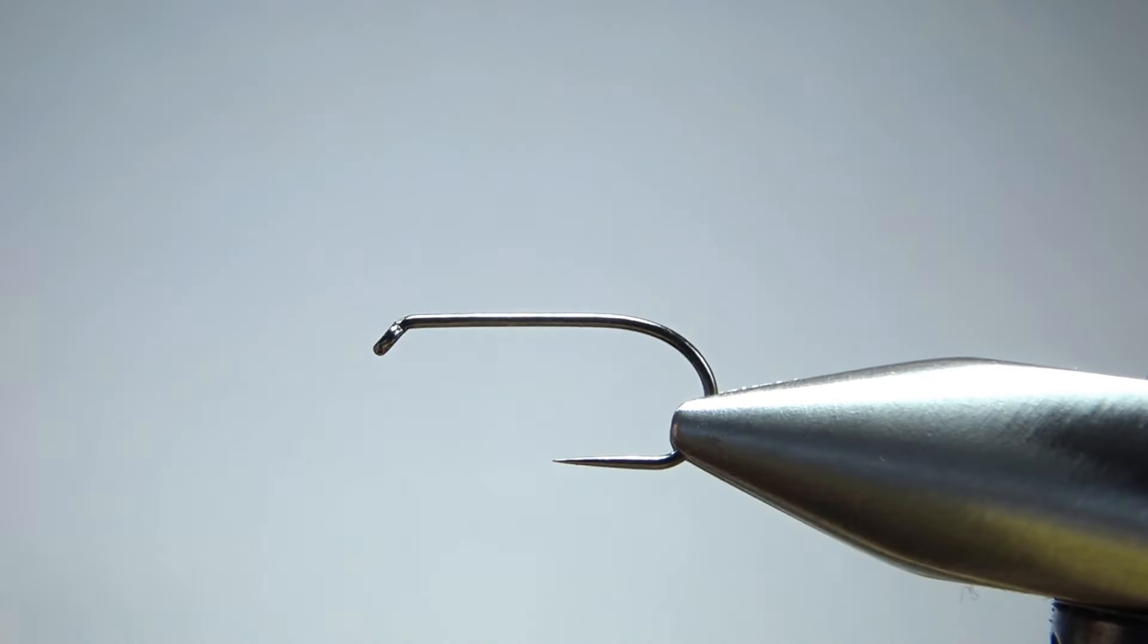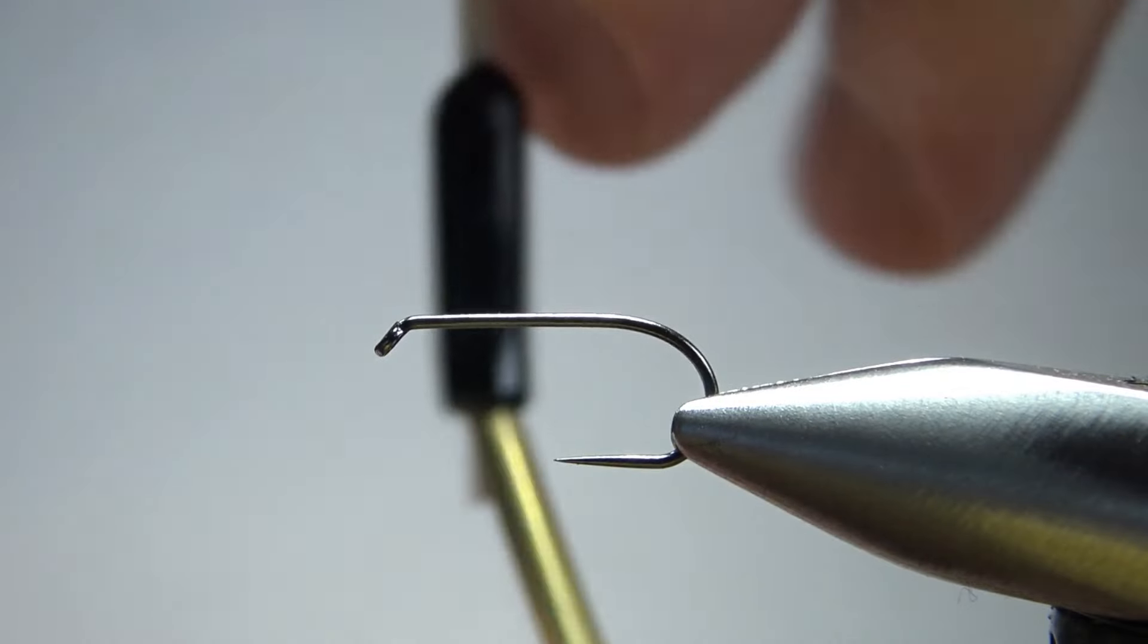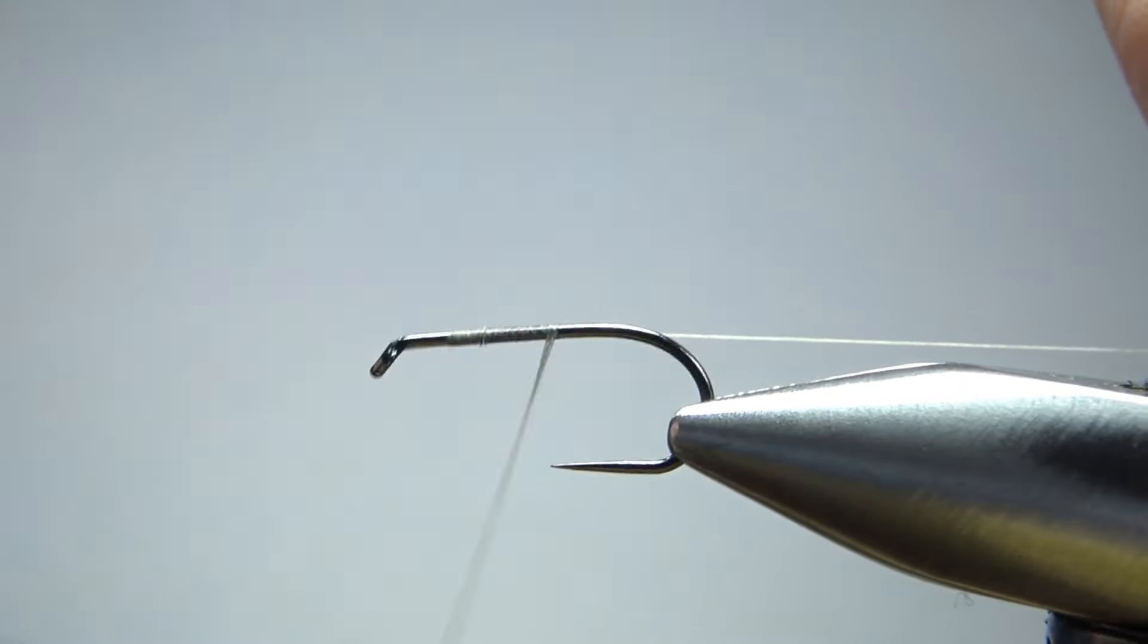This is a size 10 standard length dry fly hook, and I want to use some tan thread because I'm going with a tan color on this one. So we'll catch this in, take it back to the start of the bend.